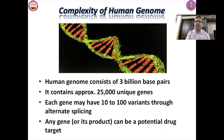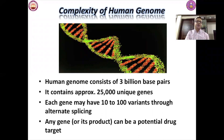Let me cover some basic components before we enter drug discovery. Regarding the human genome: in 2003, the Human Genome Project was completed. Key takeaways are that the human genome consists of three billion base pairs, contains approximately 25,000 unique genes, each gene may have 10 to 100 variants through alternate splicing, and any gene or its product can be a potential drug target.